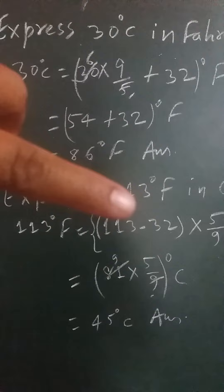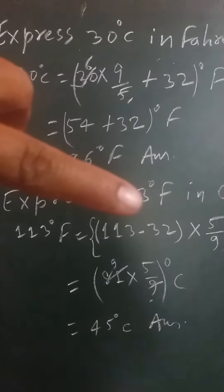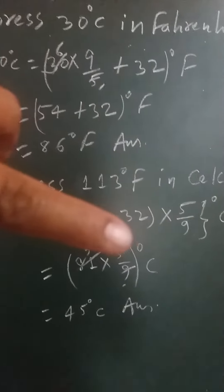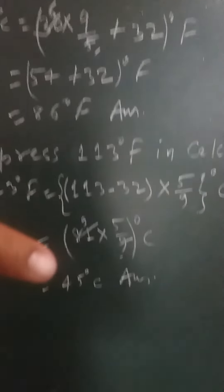degree Celsius, then we have to first of all subtract 32 from the given number and then we have to multiply 5 by 9 according to this. Then we will get the answer according to this sum.